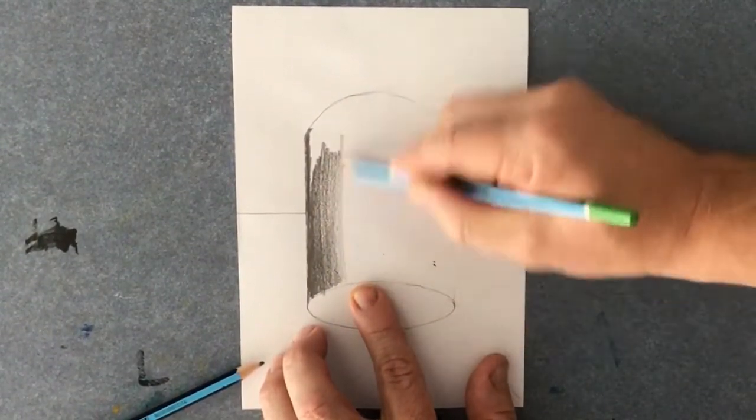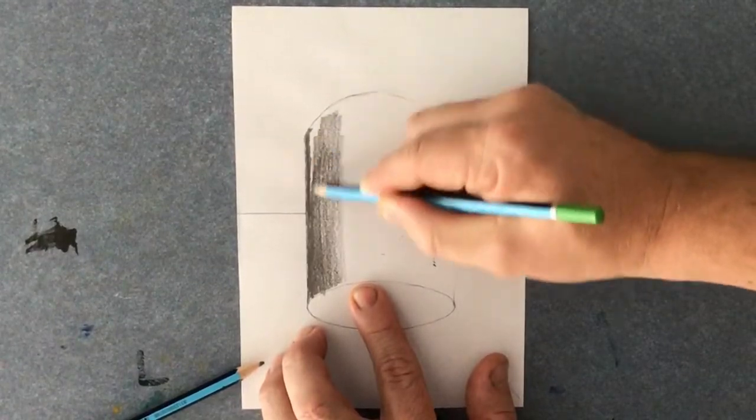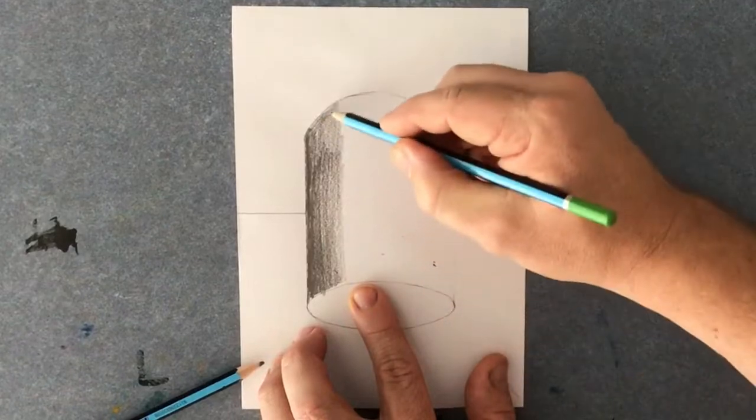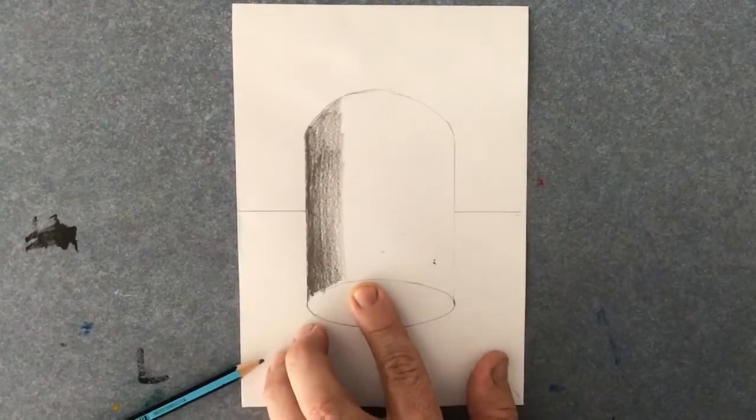I'm going to start bringing this. This is the 4B, so I'm using my darkest pencil starting in the darkest area first and trying to go vertically the longest stroke.